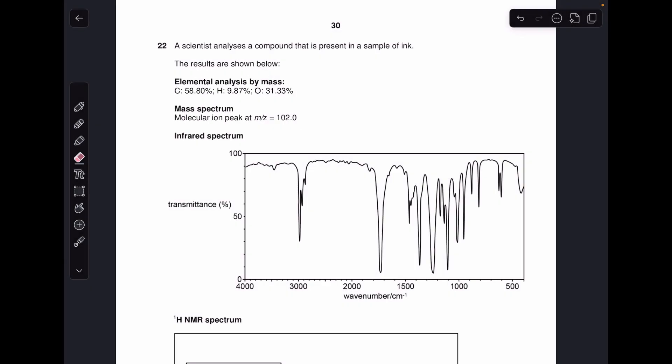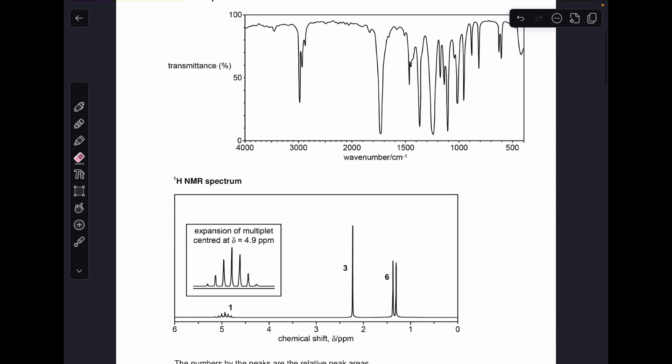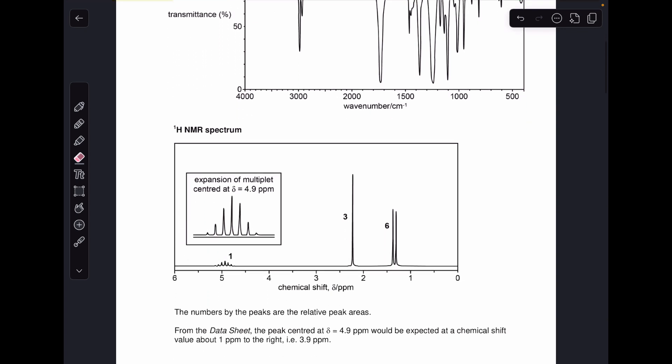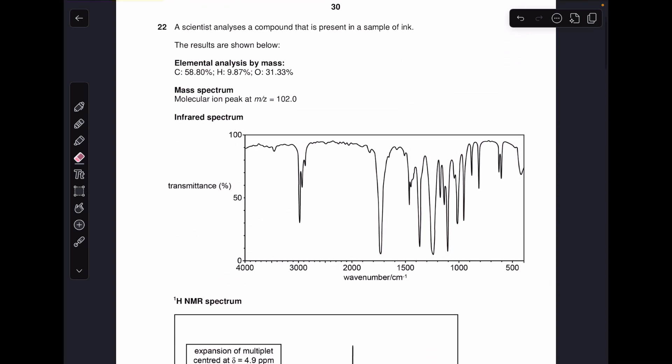Okay so make a start. A really typical question where we've got the elemental analysis by mass, information from the mass spectrum, an infrared spectrum and a proton NMR spectrum. Basically we've got to come up with a feasible structure for this compound that's present in the sample of ink.